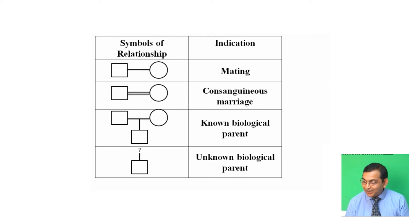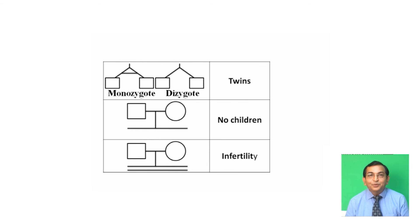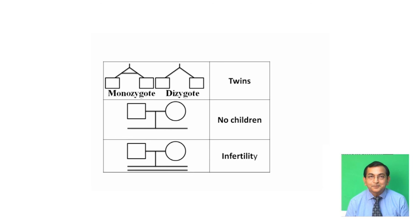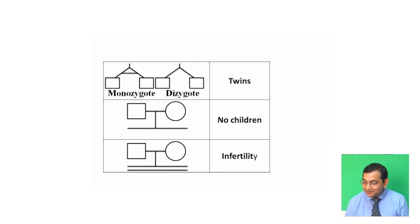There are also designations for known and unknown biological parents. In the case of twins, they are designated as either monozygotic twins or dizygotic twins. Symbols are also given for no children and for infertility.